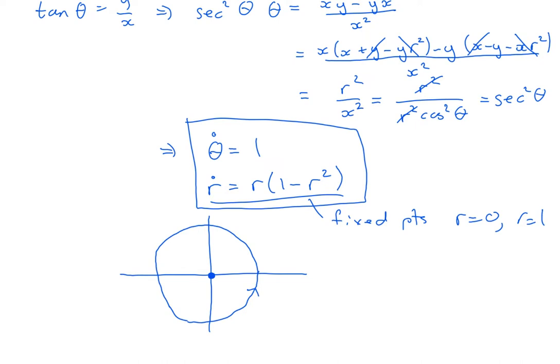What about the other solutions? Well, the phase portrait of the r equation there is quite simple. It's got two fixed points at r equals 0 and r equals 1. The right-hand side is positive when r is between 0 and 1, negative when r is bigger than 1.